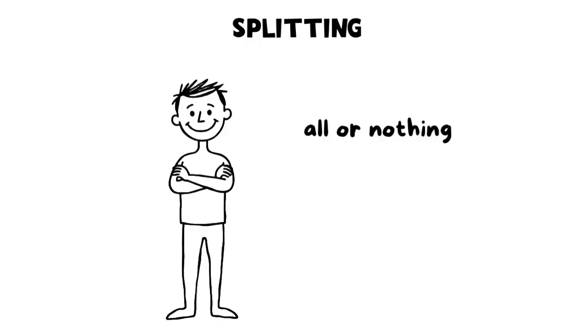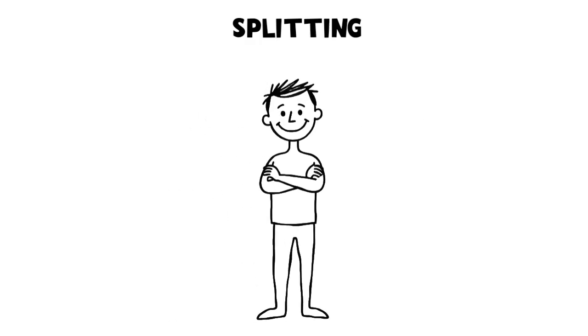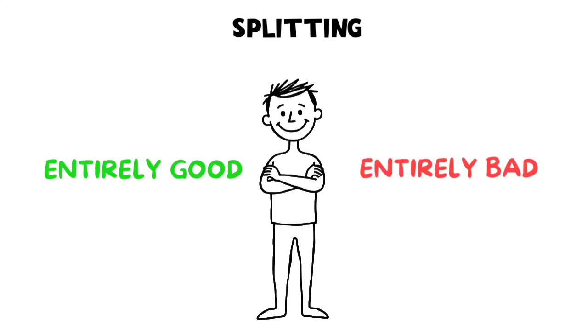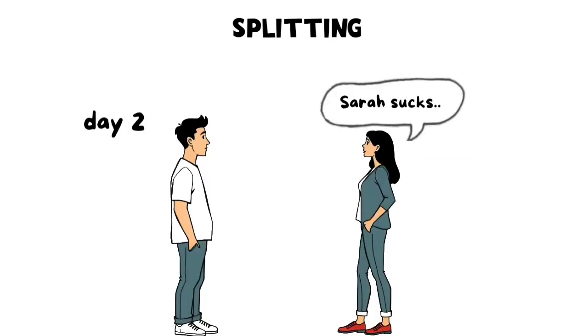Splitting. Splitting is an all-or-nothing way of thinking where someone sees people or situations as entirely good or entirely bad. A person might idolize a friend one day and see them as an enemy the next.